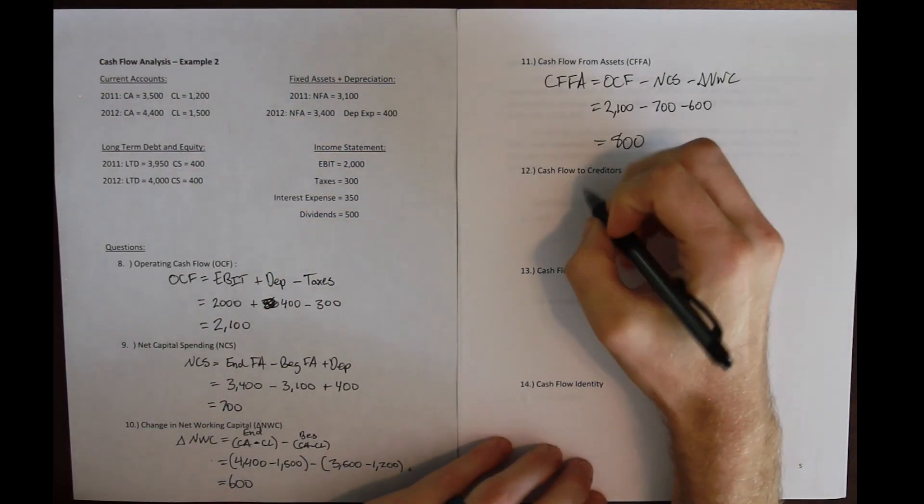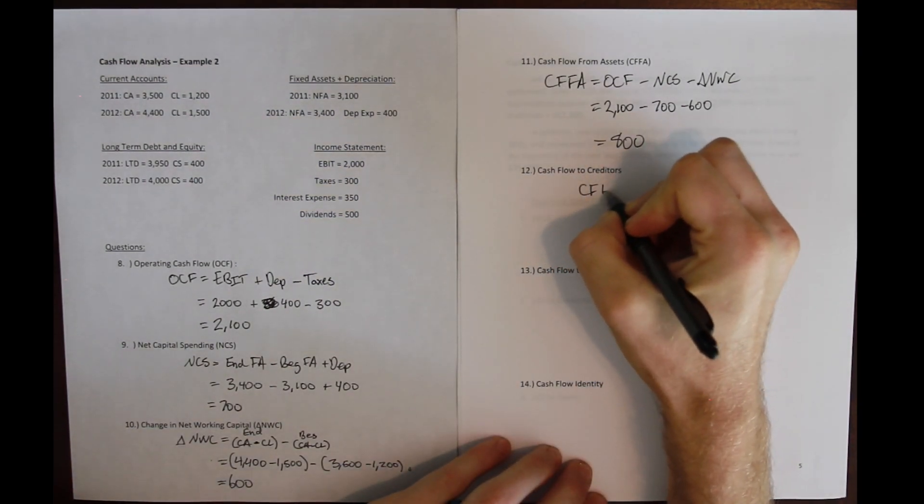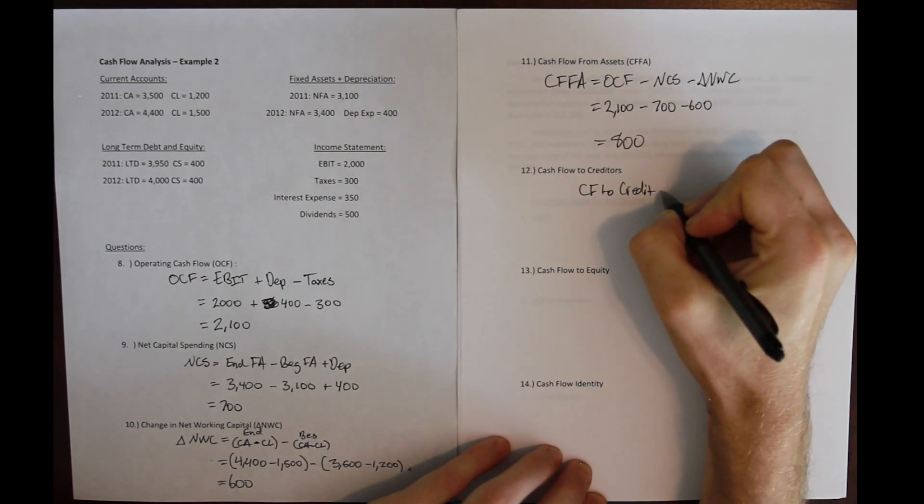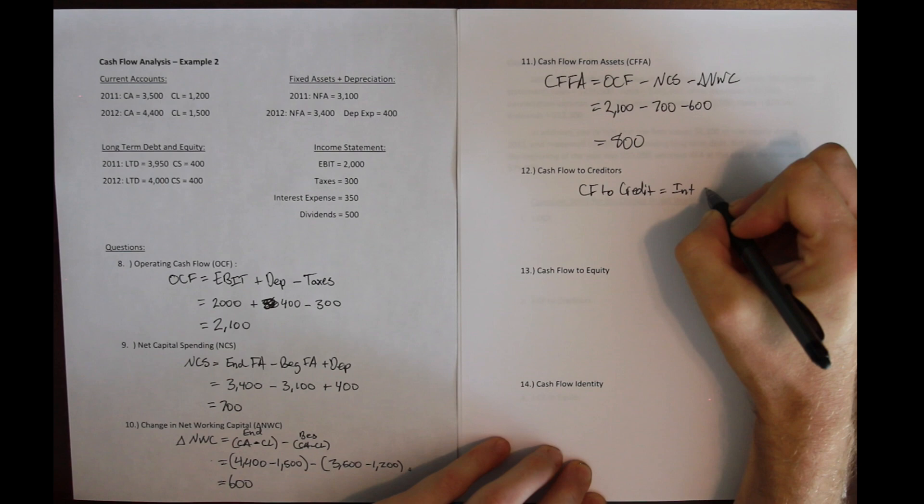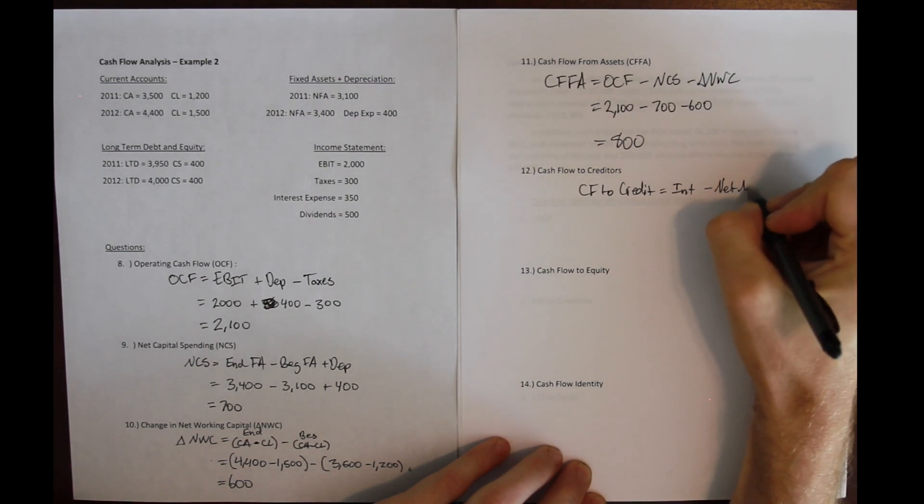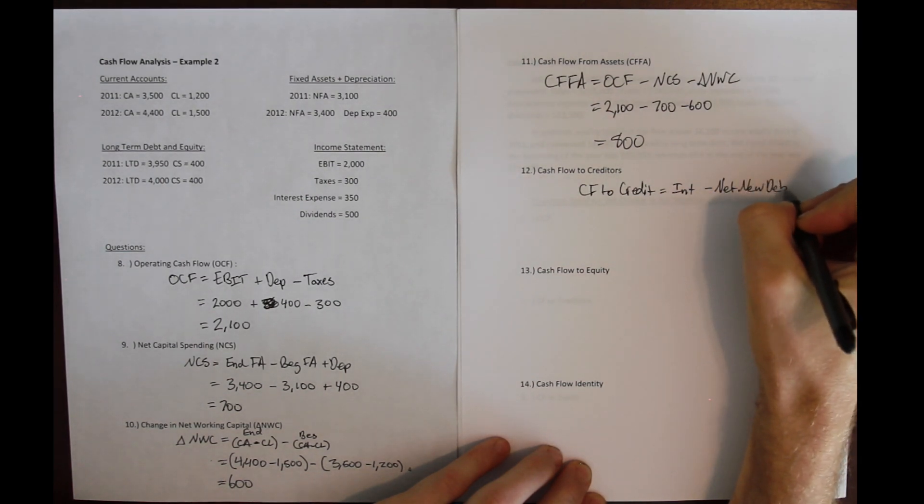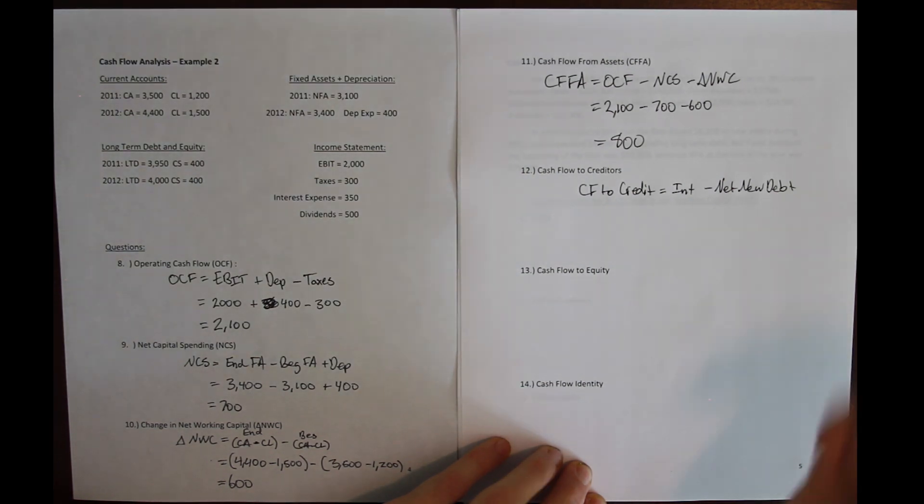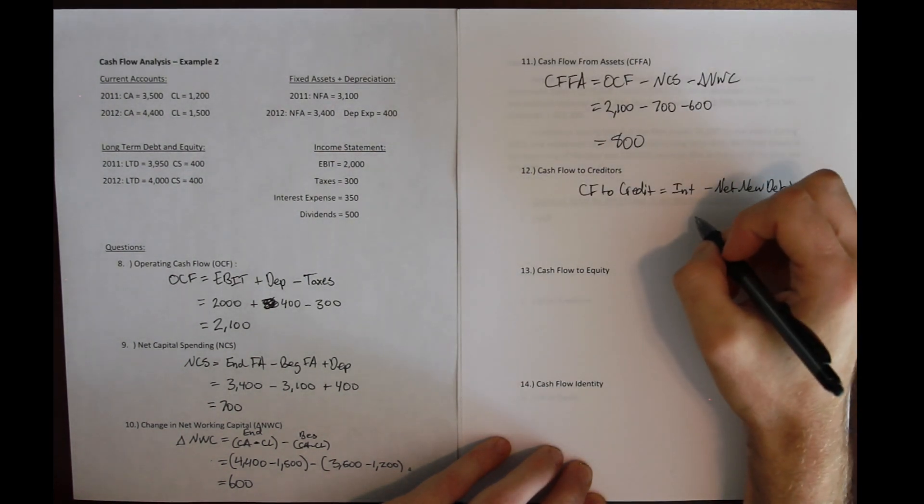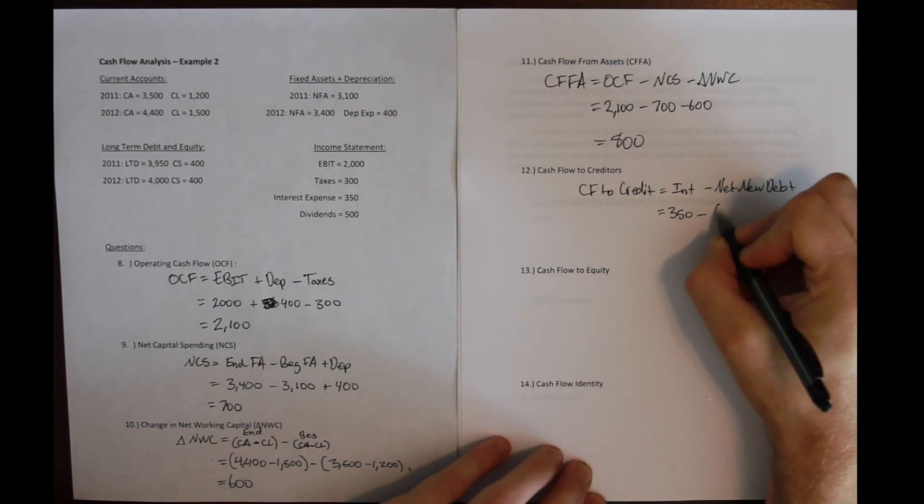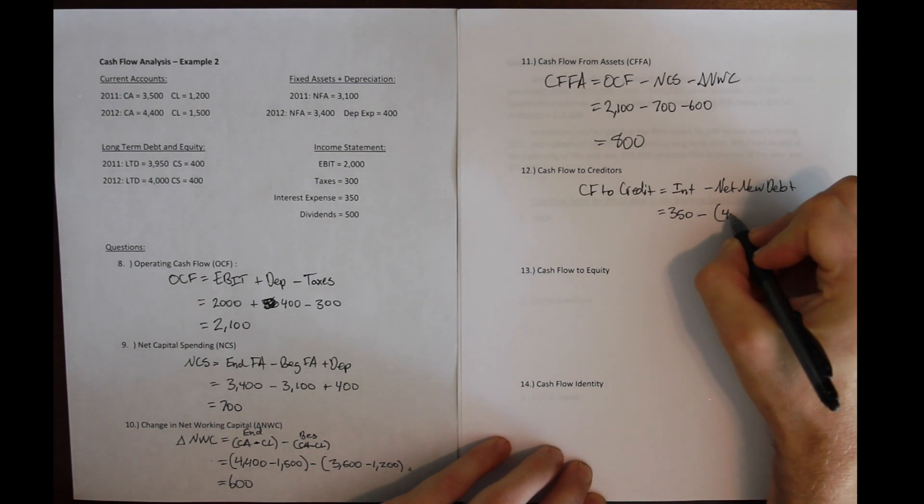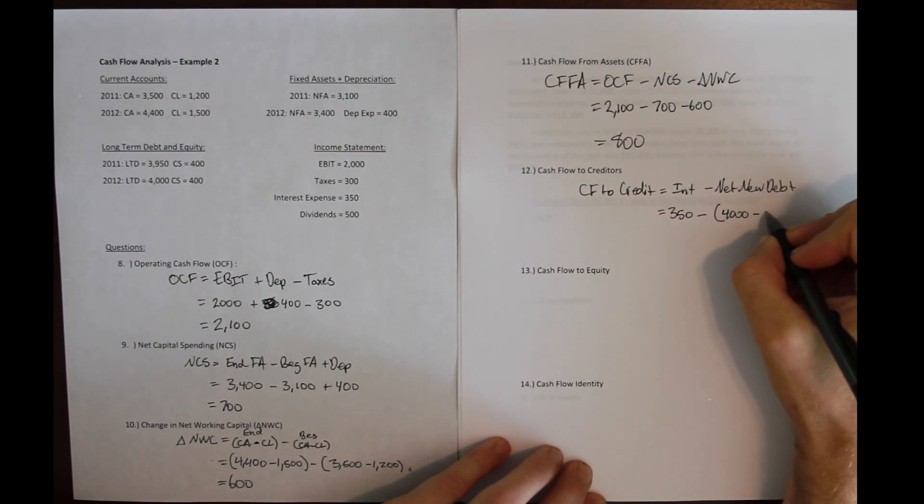We know that 800 total has to be distributed to our stakeholders. We don't know what the split is going to be, so we look at our cash flow to creditors. Let's see how much money did we pay back on our loans. Cash flow to creditors is interest expense minus net new debt, where net new debt is the change in our long-term debt account from one year to the next. So our interest expense here is 350 dollars, and the net new debt is 2012 long-term debt minus 2011 long-term debt.